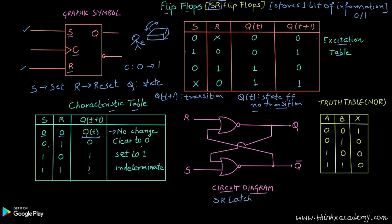When S is zero and R is one, that means we want to reset the flip-flop. If the state is one or zero, it will be cleared to zero — that is the meaning of reset. When S is one and R is zero, we want to set the flip-flop to one. We will also study JK flip-flop, D flip-flop, and their characteristic tables.